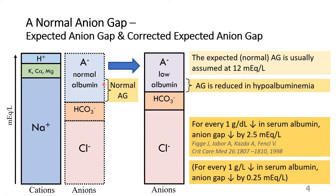The normal anion gap is usually assumed at 12 milliequivalents per liter. However, albumin is the main component of the unmeasured anionic charge, and in the presence of low albumin, the anion gap will be reduced in hypoalbuminemia. For every one gram per deciliter reduction in serum albumin, the anion gap will reduce by 2.5 milliequivalents per liter. If using grams per liter, for every one gram per liter reduction, the anion gap reduces by 0.25 milliequivalents per liter.